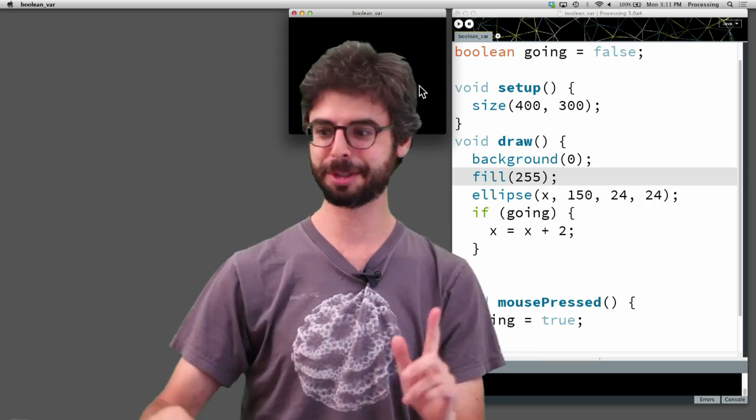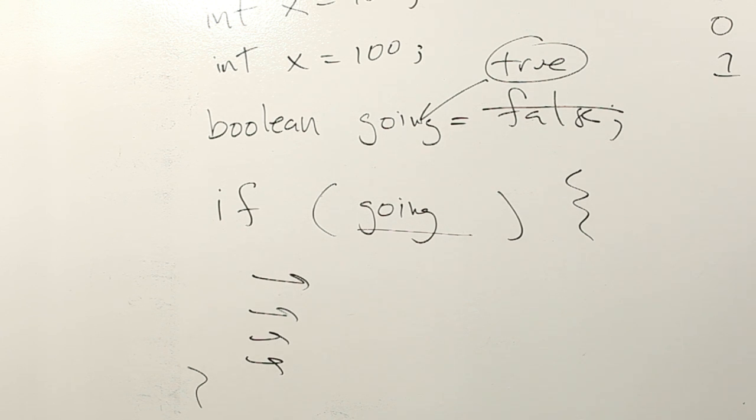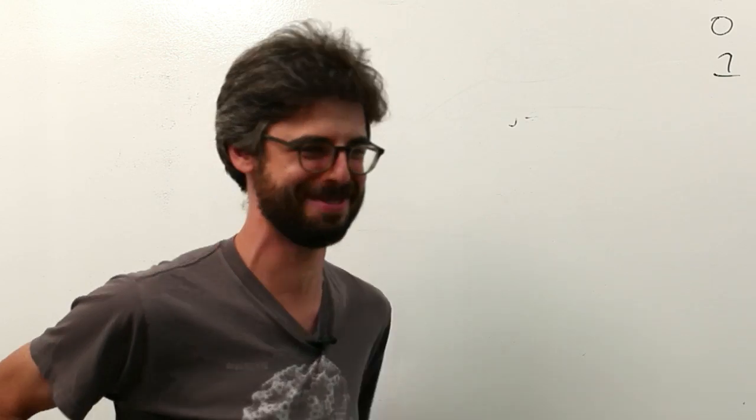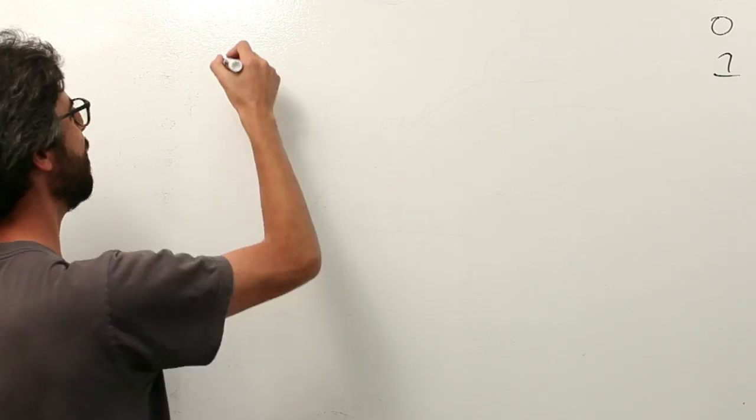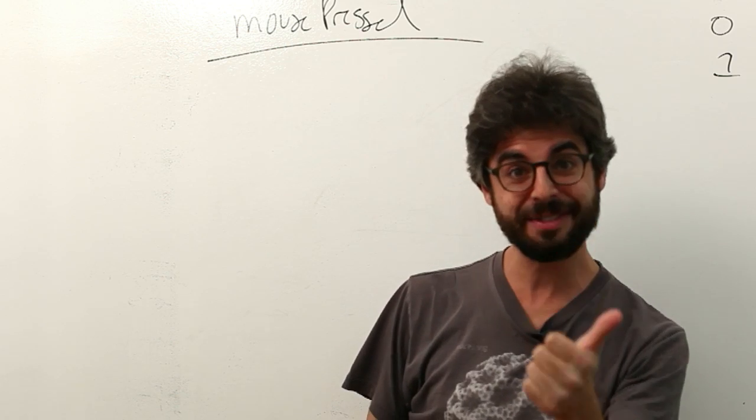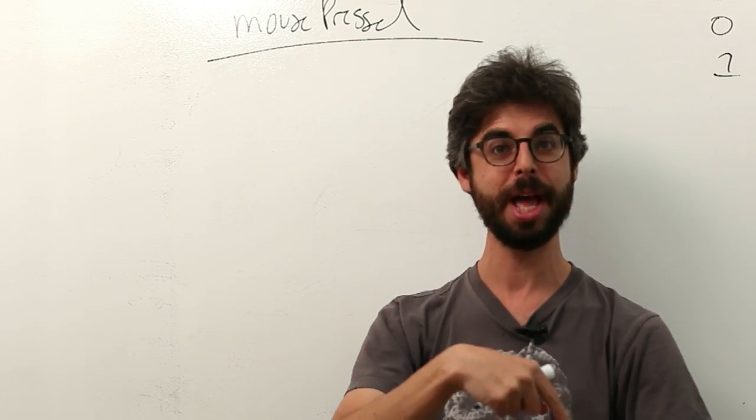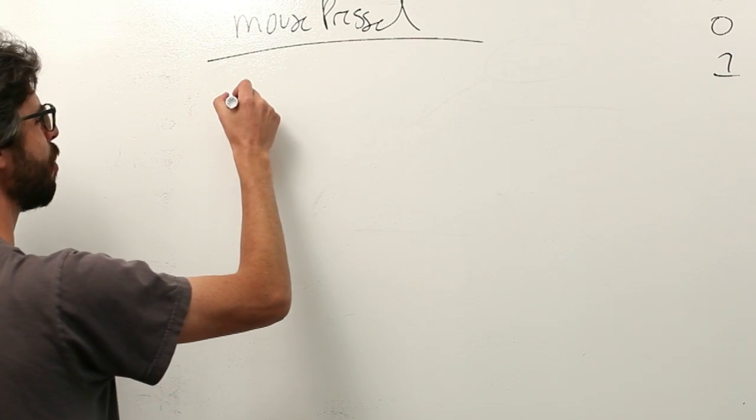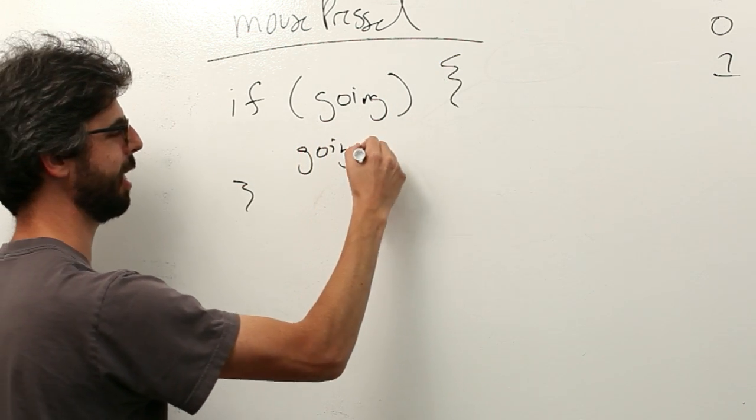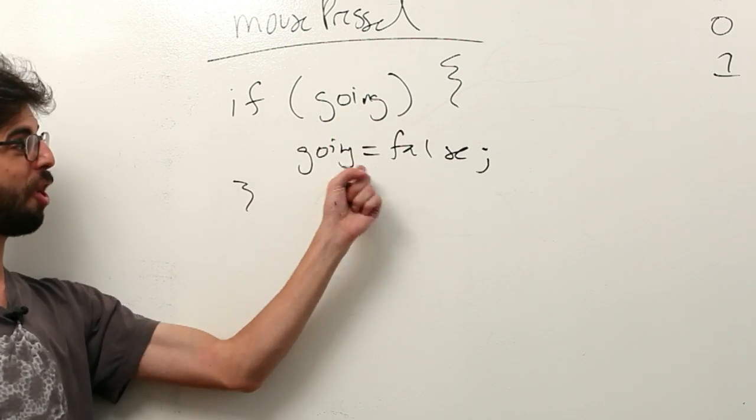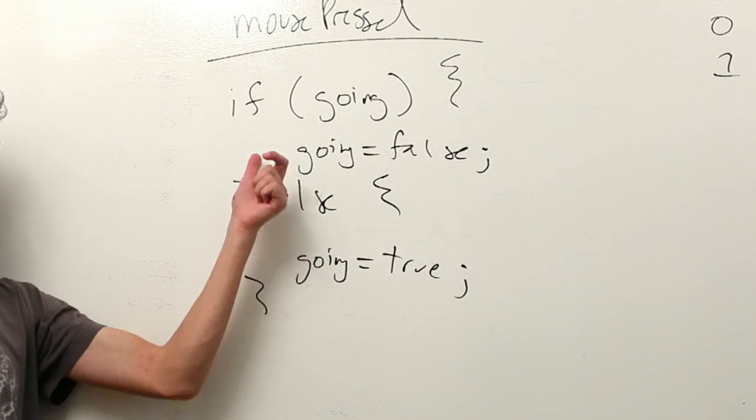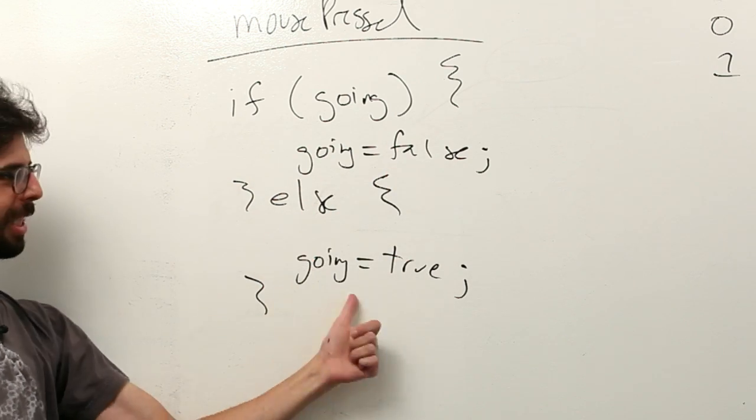Here's a neat little trick. So in mousePressed, we are saying going equals true. But what if I want going to only become true if it wasn't true? And if going was already true, I want going to now be false. In other words, I want to say if going, then going equals false, right? If going is true, set going equal to false. Otherwise, set going equal to true. So if going is true, set it equal to false. Otherwise, if it was false, set it equal to true. Let's go implement that.